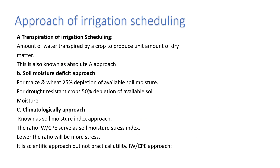The next topic is approaches of irrigation scheduling. First is the transpiration ratio approach — the amount of water transpired by a crop to produce a unit amount of dry matter, also known as the absolute approach. Second is the soil moisture deficit approach: for maize and wheat, 25% depletion of available soil moisture occurs; for drought-resistant crops, 50% depletion occurs. Third is the climatological approach or IW/CPE approach, also known as the soil moisture index approach. The ratio of IW to CPE serves as the soil moisture stress index — the lower the ratio, the more stressful. It is a scientific approach but not of practical utility.